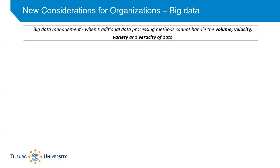Notice that I did not include specific values for volume, velocity, variety, and veracity. This is because big data management, by definition, is very dynamic. So about 20 years ago, if you said that you were dealing with 20 gigabytes of data, it would probably qualify as big data. Nowadays, gigabytes of data can often be opened on a personal laptop, so it does not really qualify as big data these days.